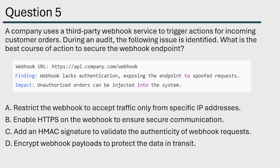What is the best course of action to secure the webhook endpoint? A: Restrict the webhook to accept traffic only from specific IP addresses. That could be a good answer — I like that one. B: Enable HTTPS on the webhook to ensure secure communication. That one feels too easy, because if you look at the webhook URL it already says HTTPS. So we can throw that one away.